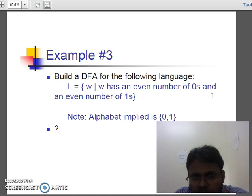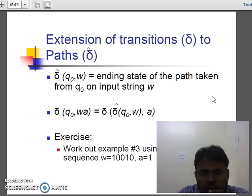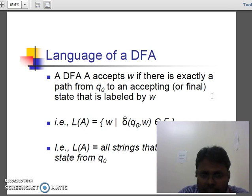Coming to the third example: a string having even number of zeros and even number of ones. The possible input symbols are zeros and ones, which is represented using a transition function called del. This is an extension of transition: del starts from the state q0 by reading the input symbol w and has to terminate itself by reaching the final state qf. This is a successive transition, meaning for each input symbol there must be a transition from one state to the other state.